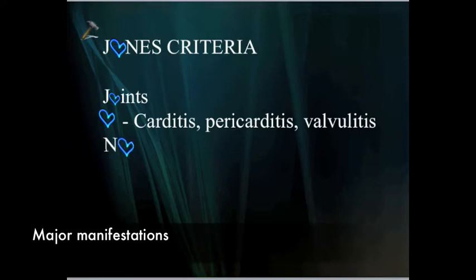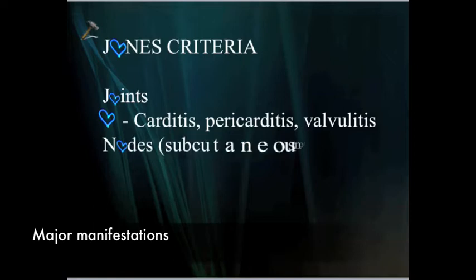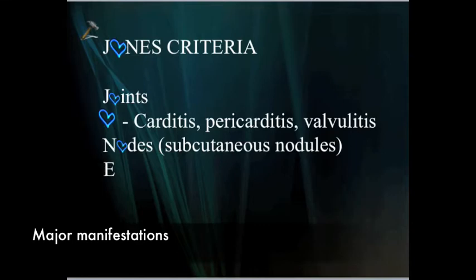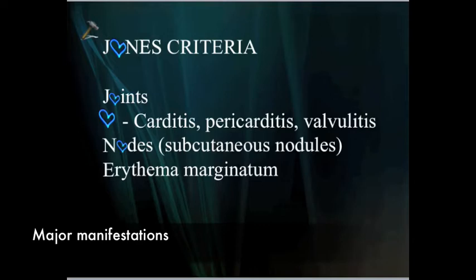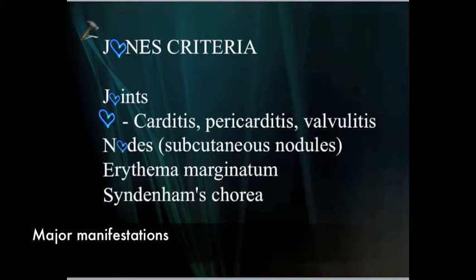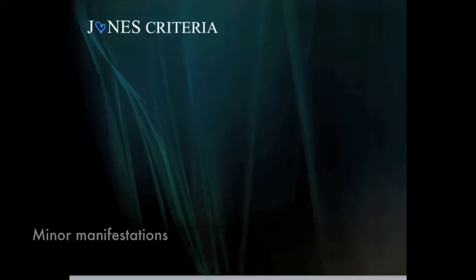The N stands for subcutaneous nodules, and we'll talk about this in just a moment. The E is a very distinctive rash called erythema marginatum, also known as erythema annulare because of its ring shape. And finally, the S is for Sydenham's chorea, which is a neurologic sequelae.